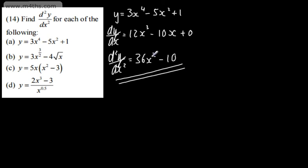If we were studying a further unit, what we would do is take a value of x, substitute it in, and find whether that gives us a maximum or minimum point if we found a stationary point. For now, we're simply going to find and write out the second derivatives.